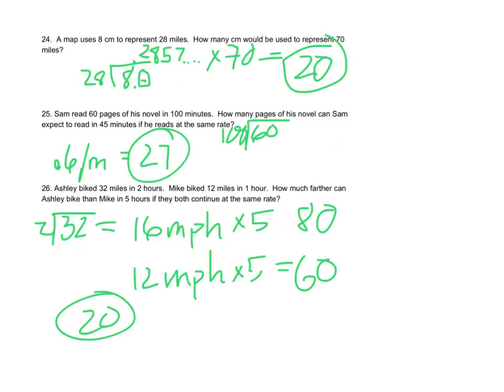Let's take a look at 24. A map uses 8 centimeters to represent 28 miles. We need to find out how many centimeters represent 1 mile. We're going to divide 8 into 28. That gives us 0.2857. We're going to take that answer and multiply by 70, which tells us how many centimeters are represented by 70 miles. That answer comes out to an even 20.